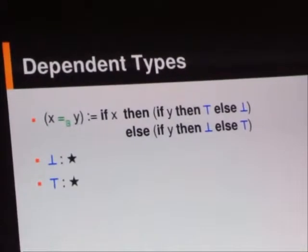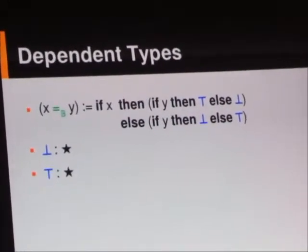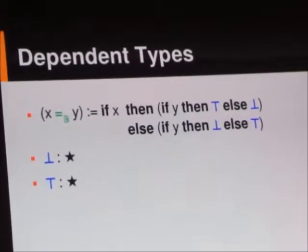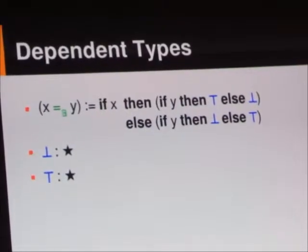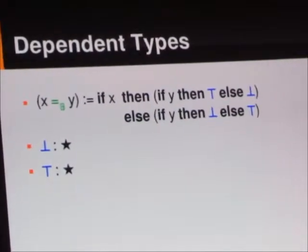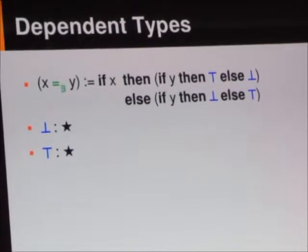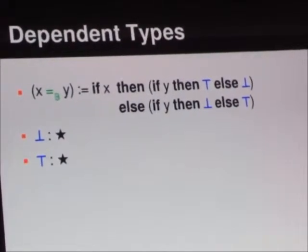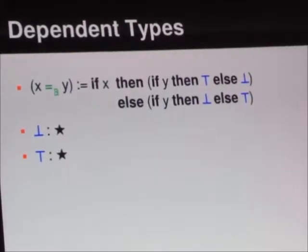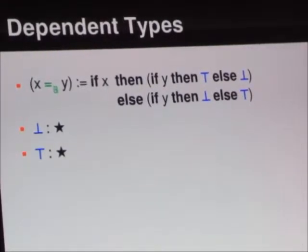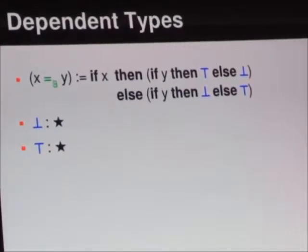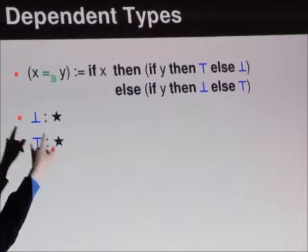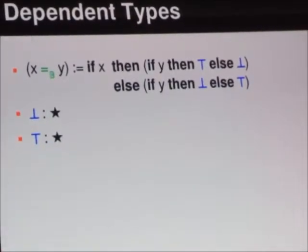But first, we actually have to talk about dependent types. So, we want to define a predicate on booleans, take two booleans, and we want this to mean that x is equal to y from a logical point of view.